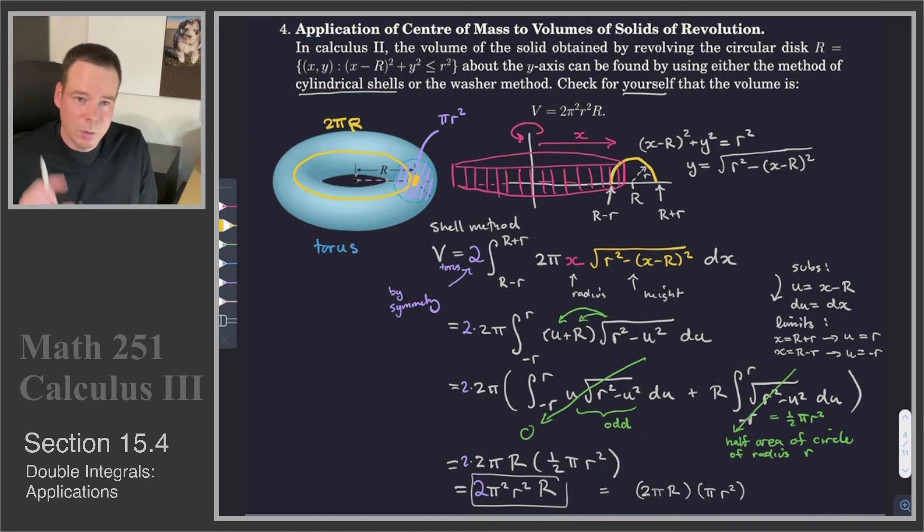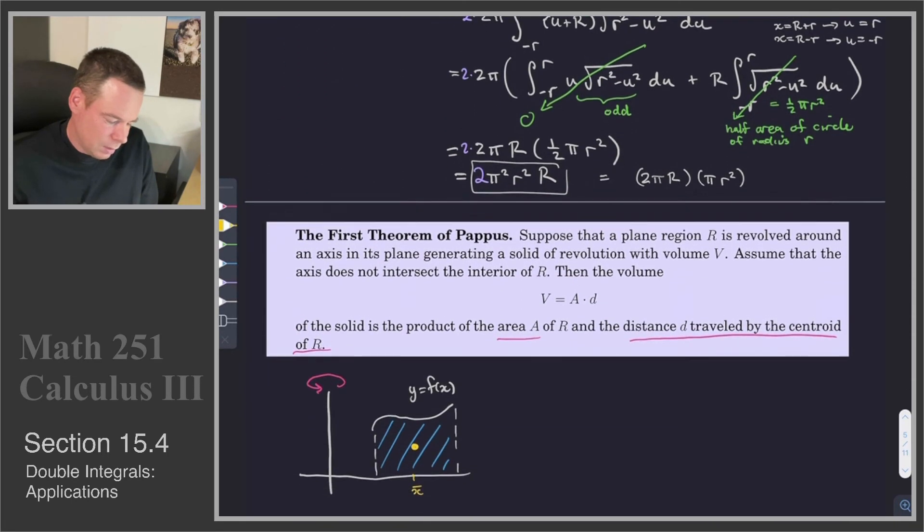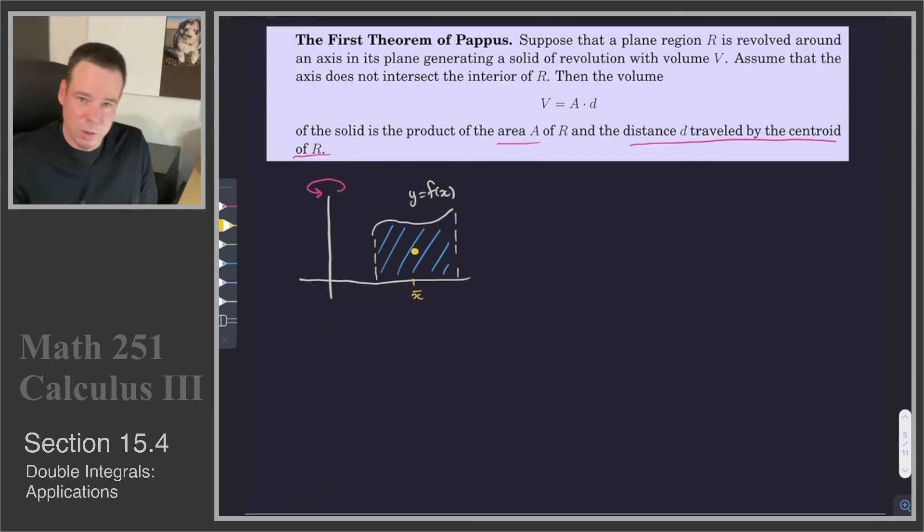And sometimes, such as in this previous example, we could just exploit symmetry and be able to figure out what x̄ is without having to compute an integral. For this previous example, we were rotating a circle, so x̄ was going to be right in the center of that circle. So looking at it this way, sometimes we can avoid doing an integral to find the volume of a solid of revolution if we can exploit symmetry to get the center of mass.